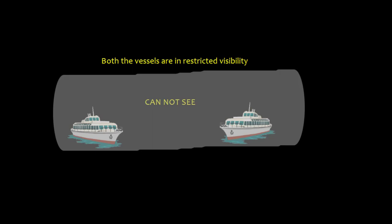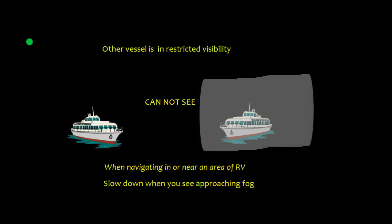The term 'in or near an area of restricted visibility' is important. Suppose there are two ships — they cannot see each other and both are in fog, so both vessels are in restricted visibility. However, there could be a case where one vessel is in the fog and the other vessel cannot see. In that case, the other vessel is near restricted visibility, so rule 19 still applies.